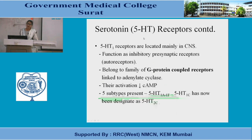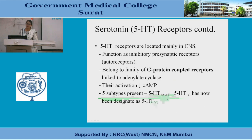5-HT1 receptors are located mainly in the CNS and function as inhibitory presynaptic receptors, also called autoreceptors. These receptors belong to G-protein coupled receptors linked to adenylyl cyclase, and their activation decreases cyclic AMP levels. In the 5-HT1 receptors, there are 5 subtypes: 5-HT1A, 1B, 1D, 1E, and 1F. 1C was found to be closer to the 5-HT2 receptor and has been redesignated as 5-HT2C.